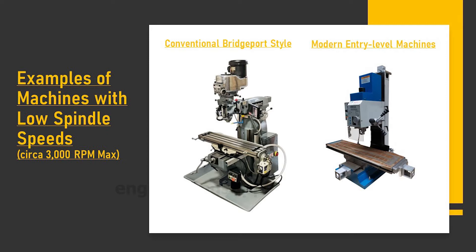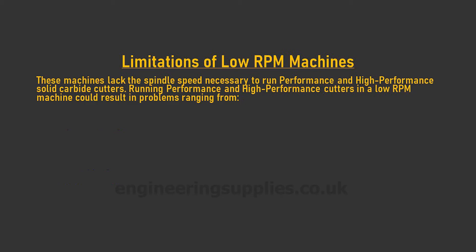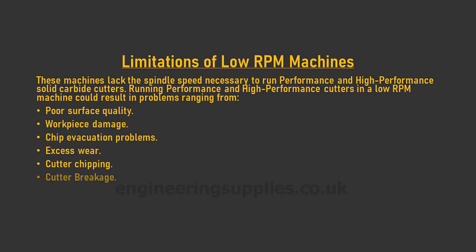Older machines, like conventional bridge ports, or entry-level machines, tend to have low spindle speeds. Usually these have maximum speeds in the region of 3000 RPM. Machines with low RPMs are generally not capable of achieving the benefits of running high-performance solid carbide cutters, as they simply run too slow. For example, the recommended speed for running a 6mm solid carbide cutter on aluminium should be 10,000 RPM.